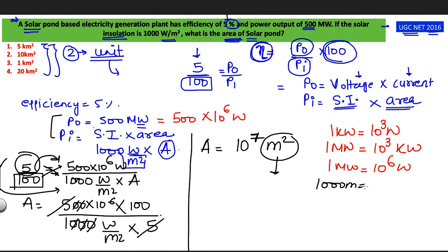1000 meter equals 1 kilometer. So I can write 1 meter equals 10 to the power minus 3 kilometer. So it will be 10 to the power 7. For meter square I am writing 10 to the power minus 3 into 10 to the power minus 3 kilometer square. Now what will be my answer, 10 to the power 1 means 10 kilometer square. So option number 2 will be my right option.